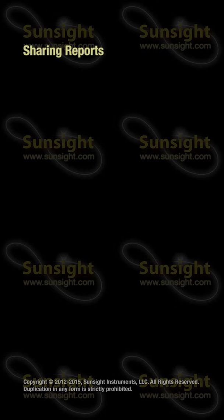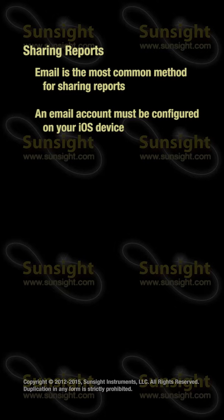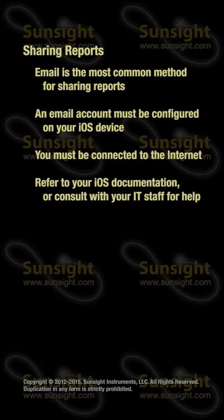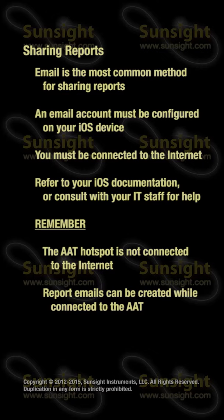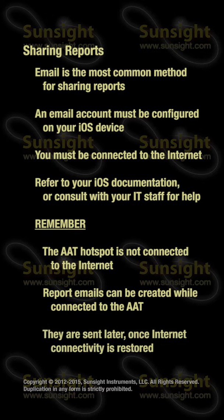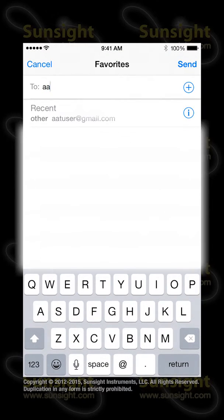In most cases, you'll want to email the generated PDF reports to your customers. In order to do this, an email account must be configured on your iOS device and you must be connected to the Internet, either via a mobile data connection or via a wireless connection with Internet connectivity. Refer to iOS documentation or your company's IT staff for assistance. Remember, the AAT's internal wireless hotspot does not have Internet connectivity. While attached to the AAT, however, you can generate and share the PDFs via email — they just won't be sent until the device is connected to the Internet. To email the report to a customer, touch the sharing icon and then touch the mail icon. Compose your email and press the Send button to finish.